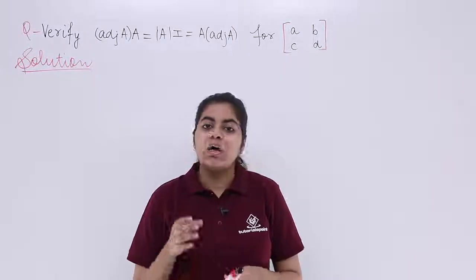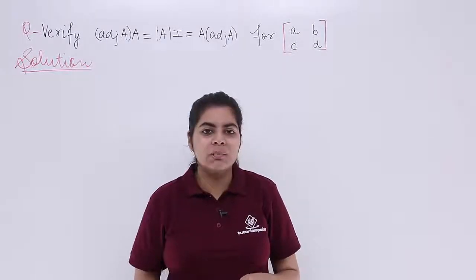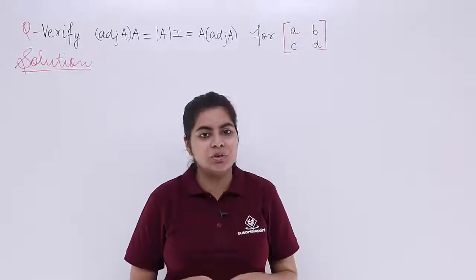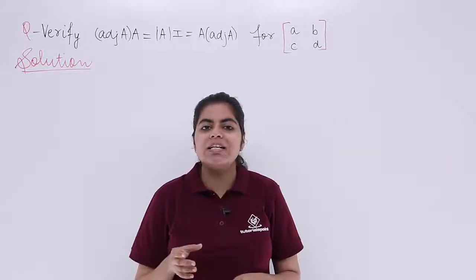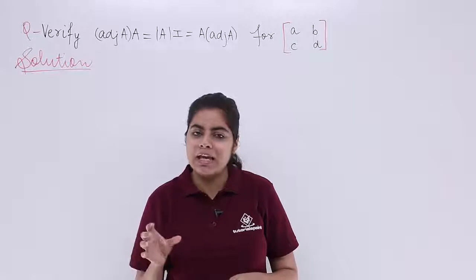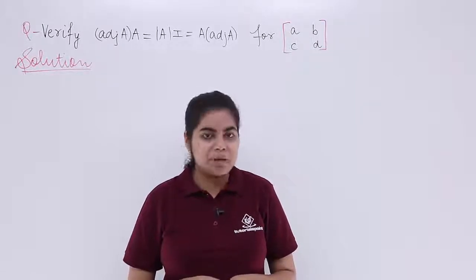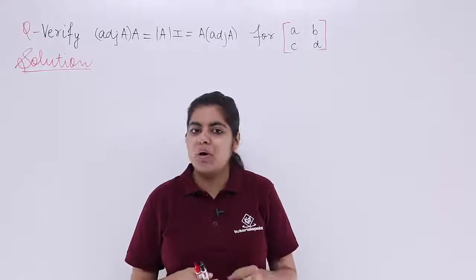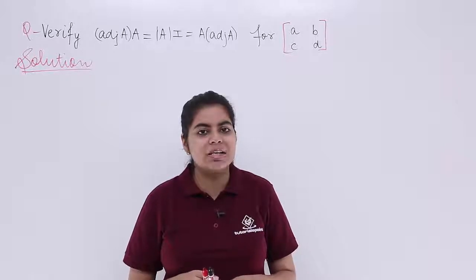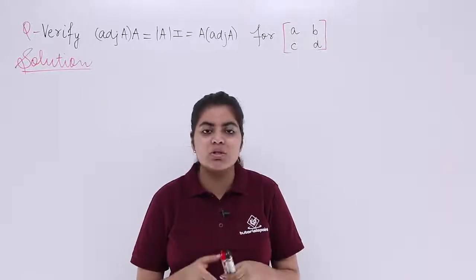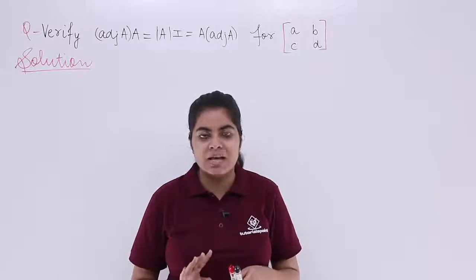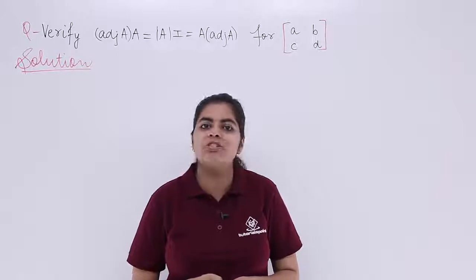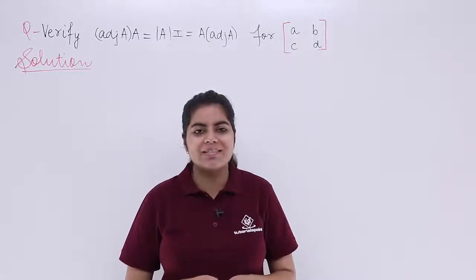In this video, let's see a question based on the theorem we studied in the previous video. That theorem is: adjoint(A) × A = det(A) × I = A × adjoint(A), where A is a square matrix and I is the identity matrix of the same order. Now let's study a question related to that.